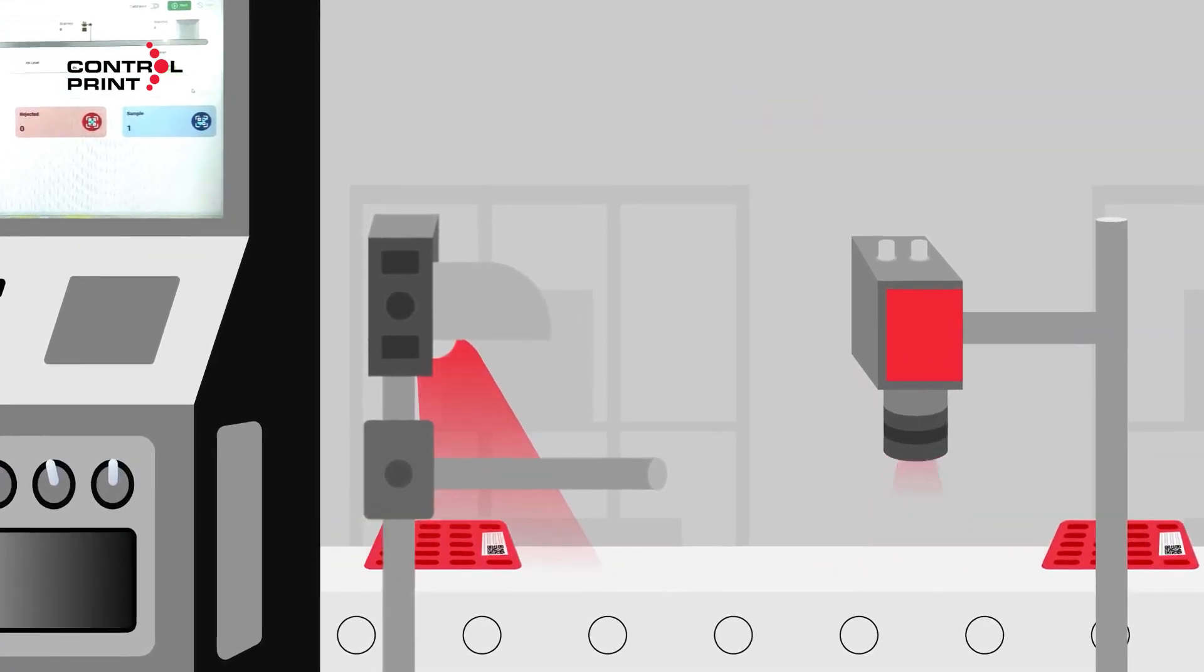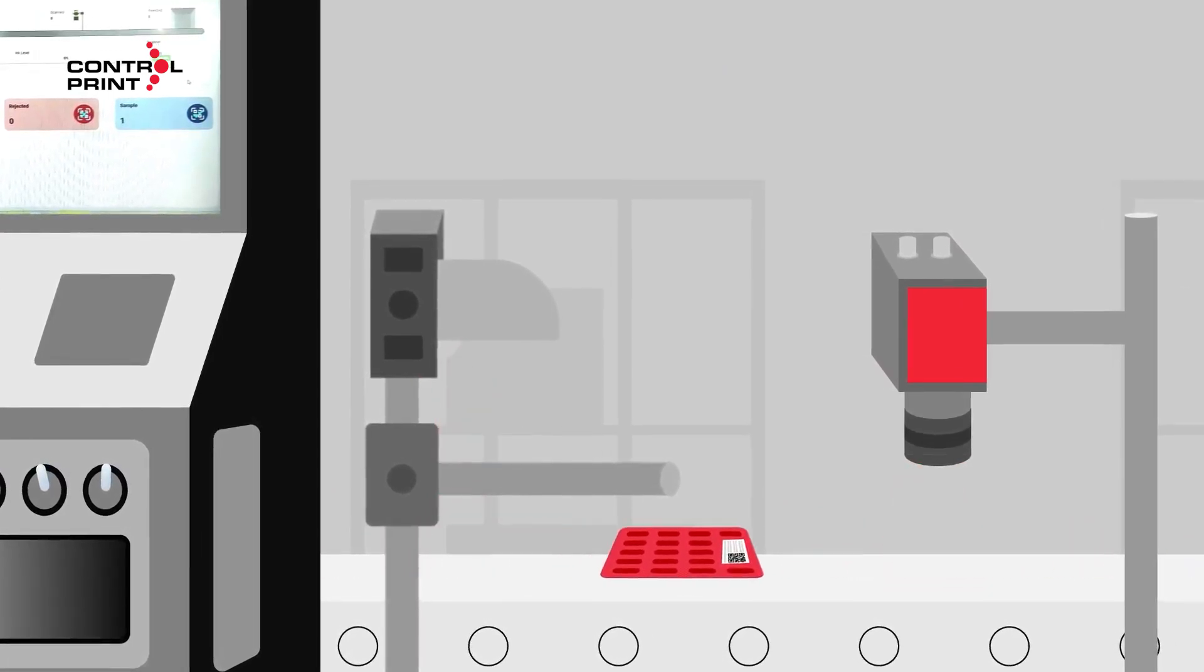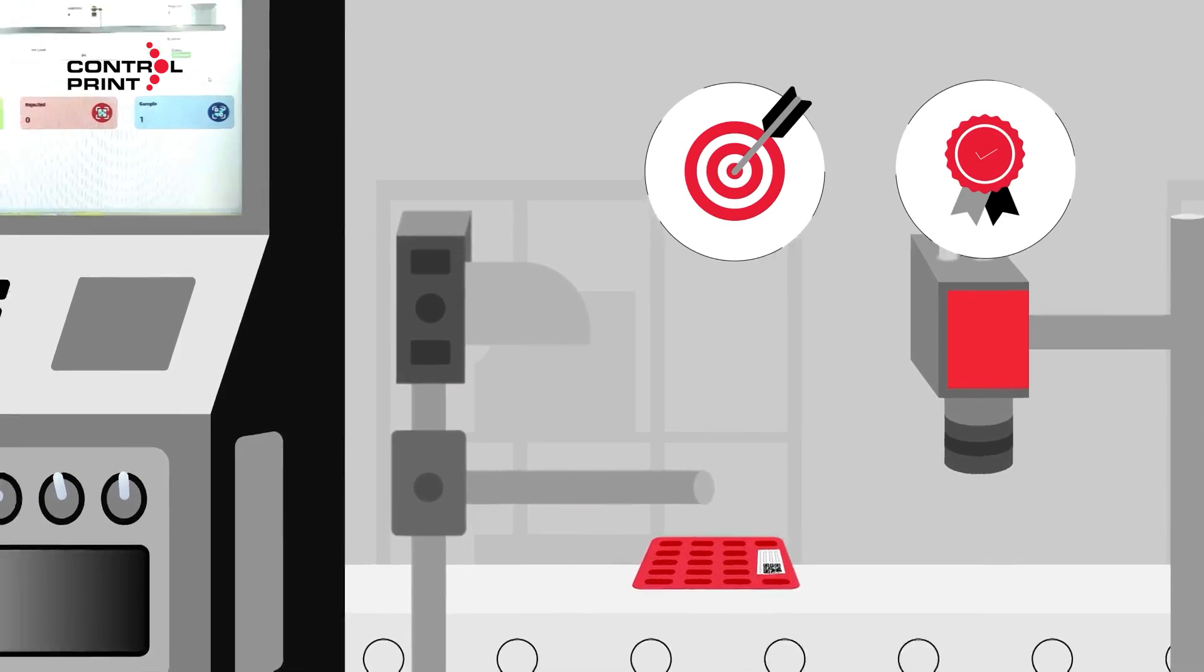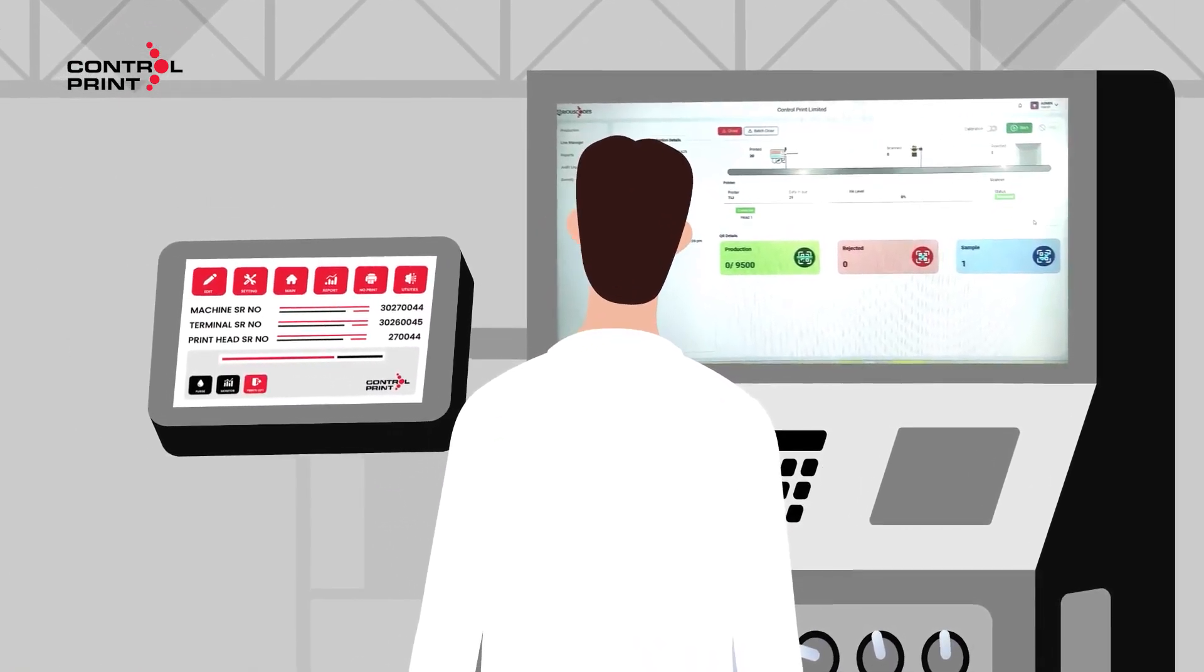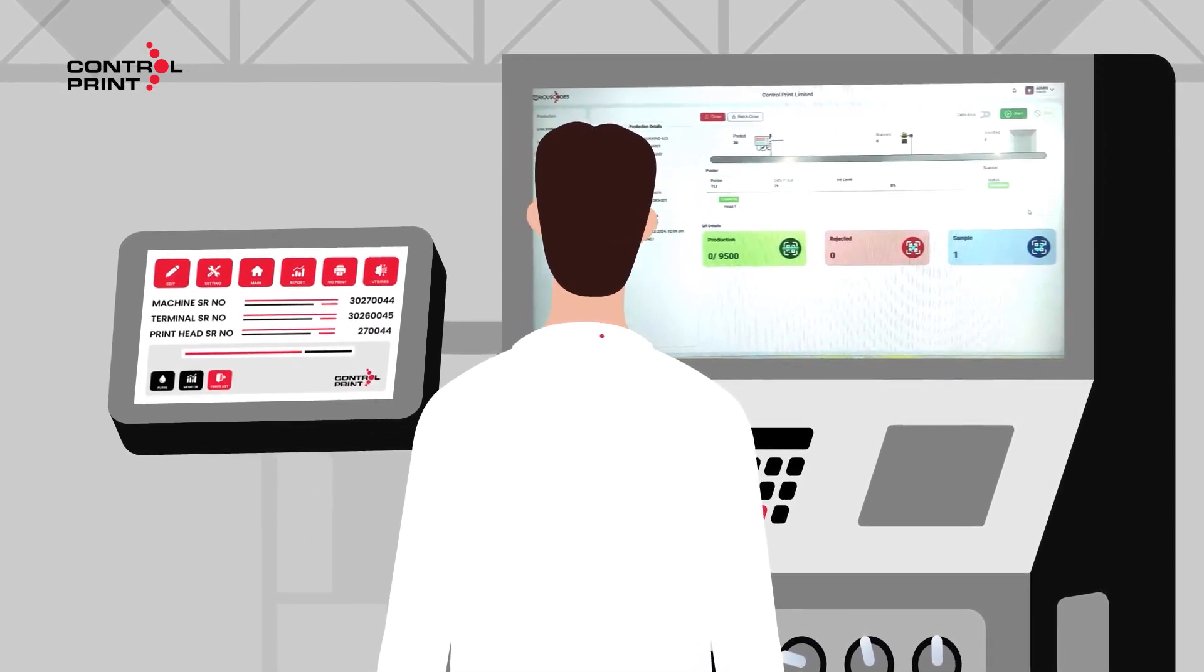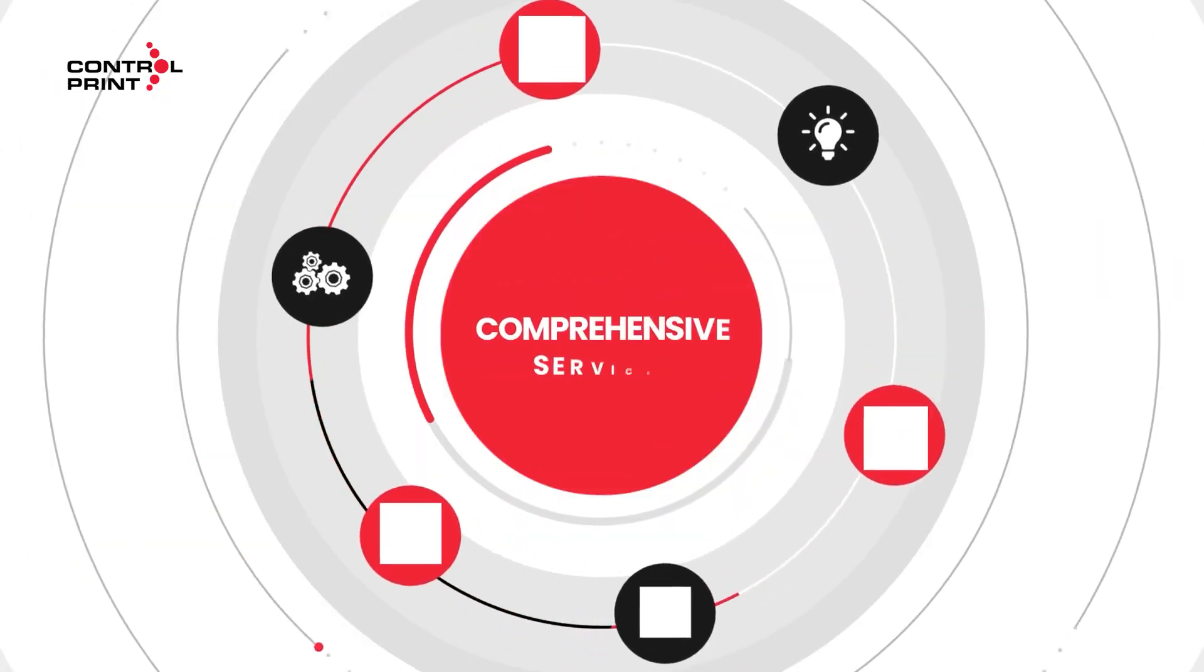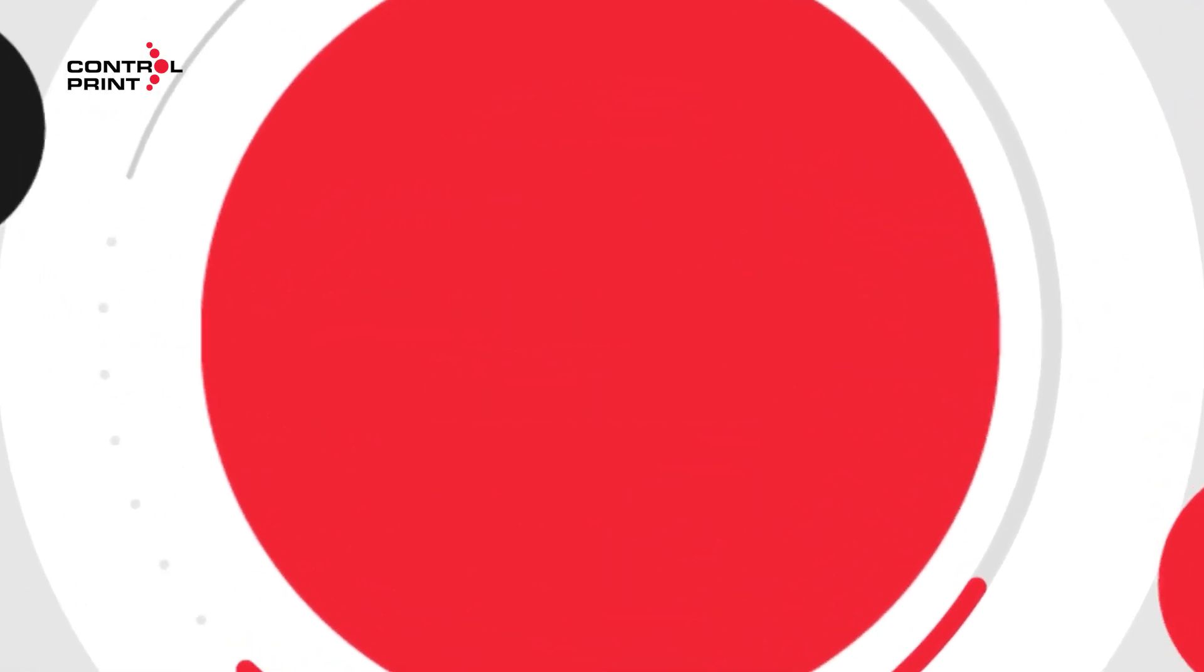Our advanced vision inspection system meticulously checks each printed code, ensuring accuracy and quality. The display monitor verifies every blister pack, guaranteeing compliance and reliability in the production process.